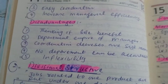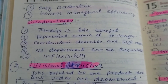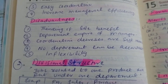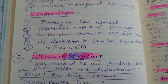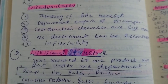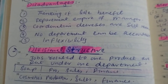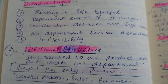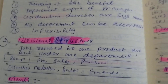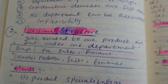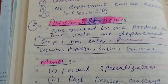The advantages of functional structure are specialization, easy supervision, easy coordination, and increased managerial efficiency. The disadvantages include departmental empire building by managers, coordination decreases as the organization size increases, no single department can be held fully accountable, and inflexibility.